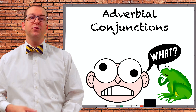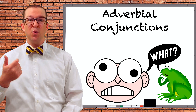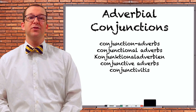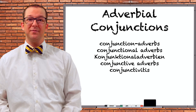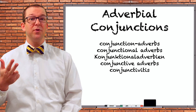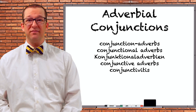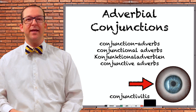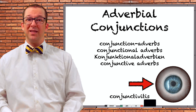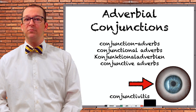Today I will teach you how to use German adverbial conjunctions — things like also, dann, trotzdem, jedoch, and a whole lot more. These conjunctions are also known by several other names, including conjunction adverbs, conjunctional adverbs, conjunctive adverbs, and conjunctivitis — that last one is the scientific name for pink eye, but the rest were real names people use online. I call them adverbial conjunctions for consistency, but the other names work too.